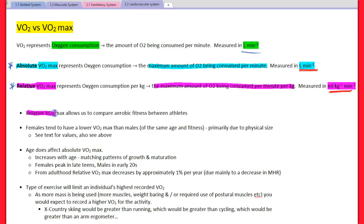Relative VO2 max allows us to compare aerobic fitness between athletes. We can compare a male to a female, we can compare a hockey player to a soccer player. It takes into account body size.